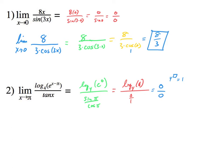So it's indeterminate form. We can simply take the derivative of the top, derivative of the bottom, then plug in π and see if that helps. We're going to take the limit as x approaches π and take the derivative of the top. We have a log, so to do that you take the derivative of the inside — that goes on top, which is just e to the x minus π — and you leave the inside on the bottom, and also put an ln4. That's the derivative of the top. The bottom, the derivative of tangent, is simply secant squared x.